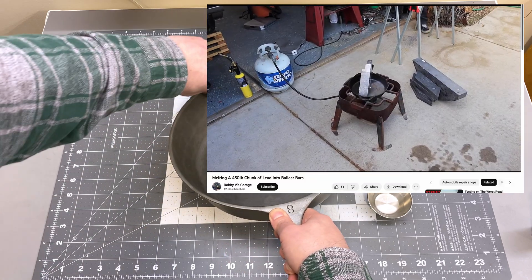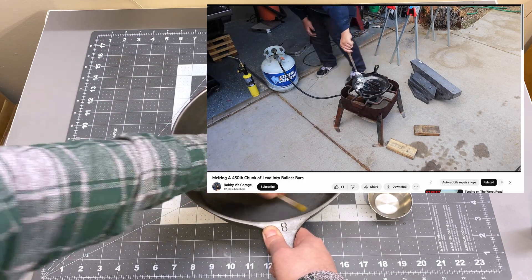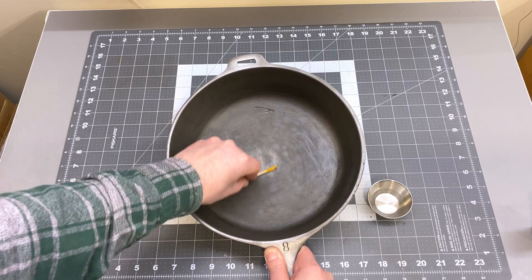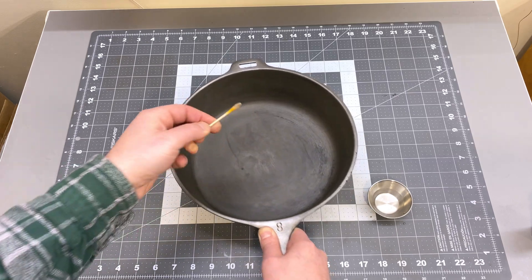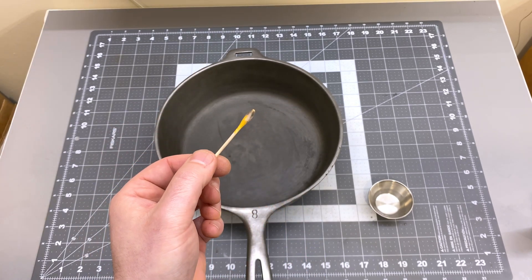Lead is just an incredibly toxic substance for the human body and its effects are cumulative, so you really don't want to be ingesting any, and especially eating off a pan that has been contaminated with lead. So it looks like another negative result there.